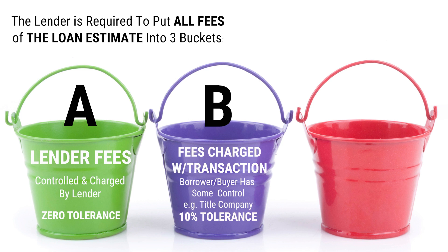Then there's Bucket B. Those are fees charged in conjunction with the transaction, but the borrower has a little control over who charges them. For example, the borrower can technically choose their title company. We need to be really close on those fees — we have a 10% tolerance. If it changes by more than 10%, we have to eat that difference.